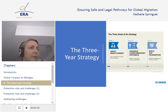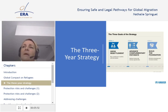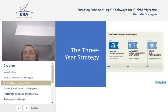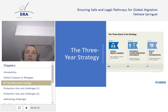Moving now to the three-year strategy on resettlement and complementary pathways. It was mandated under the Global Compact and launched in July 2019, just a few months before the first Global Refugee Forum held in December of the same year. The Global Compact promotes solidarity and responsibility sharing particularly through actions in terms of resettlement opportunities and complementary pathways. The strategy aims to resettle one million individuals by 2028 and to facilitate solutions for an additional two million individuals through complementary pathways.